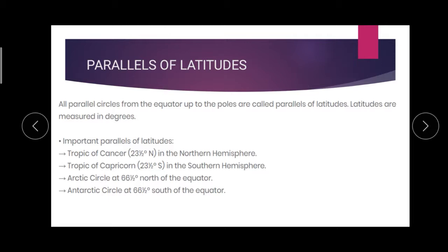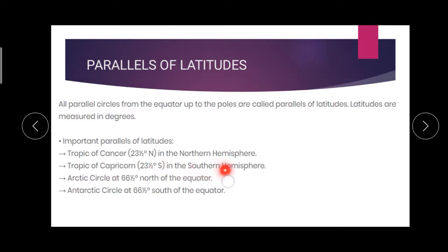What is the first one? Tropic of Cancer. Its degree is 23½° north. Tropic of Cancer is in the northern hemisphere. Second, Tropic of Capricorn — its degree is 23½° south. That is in the southern hemisphere.